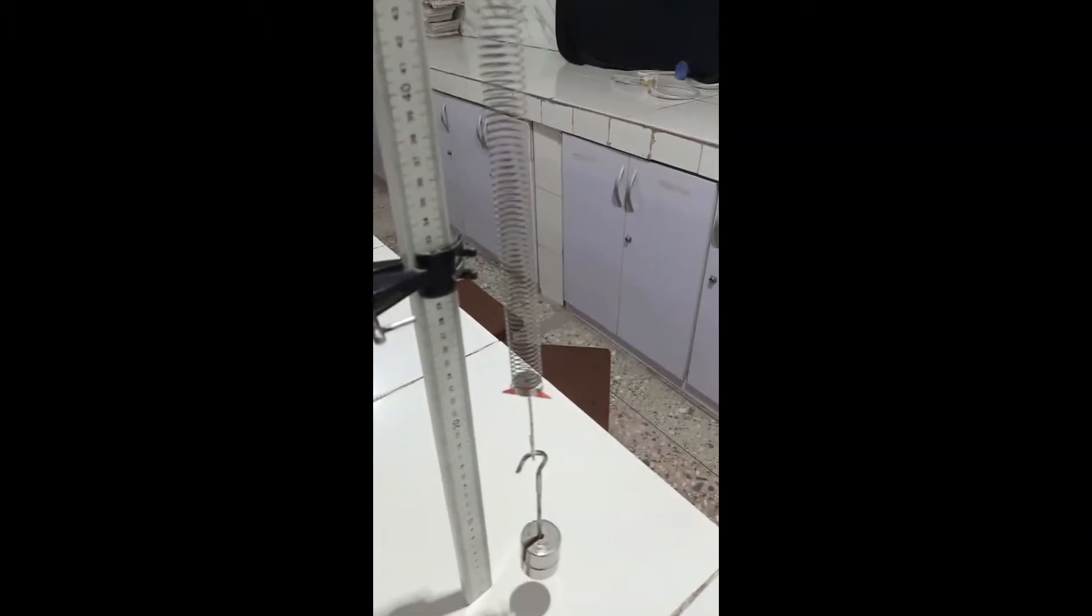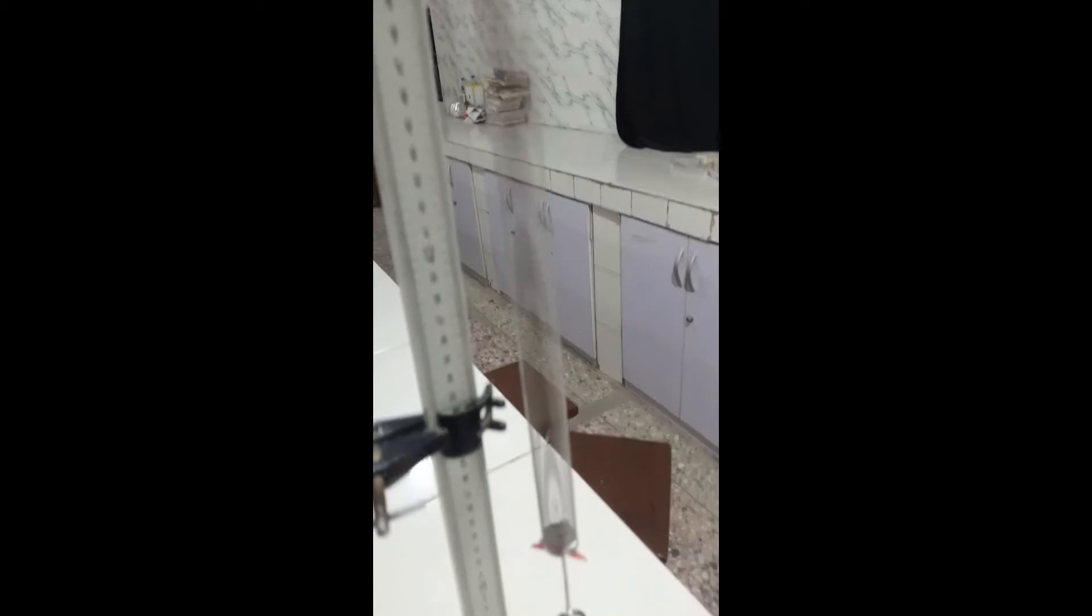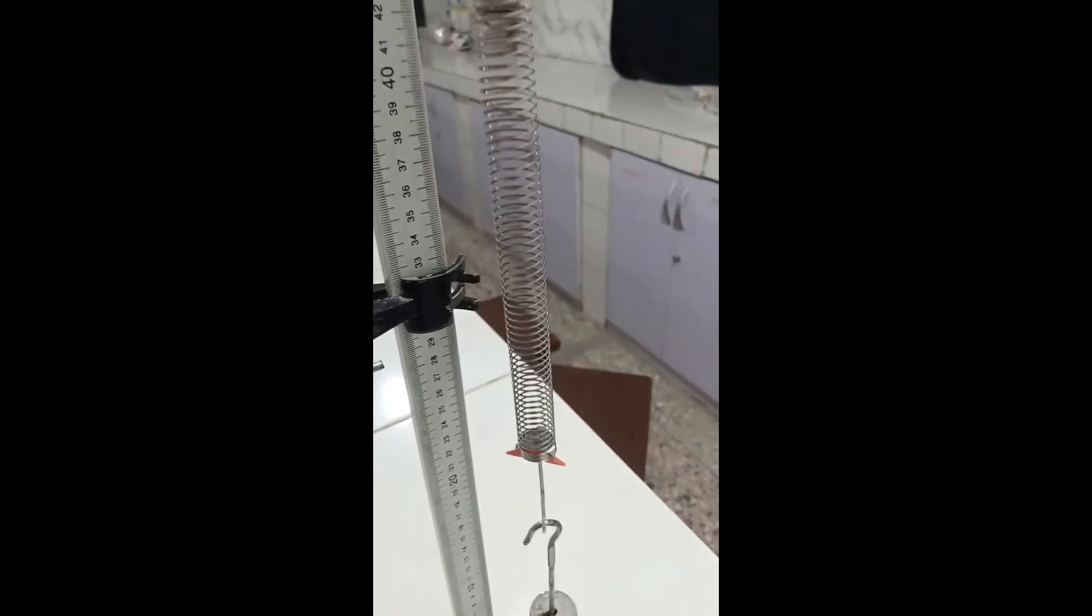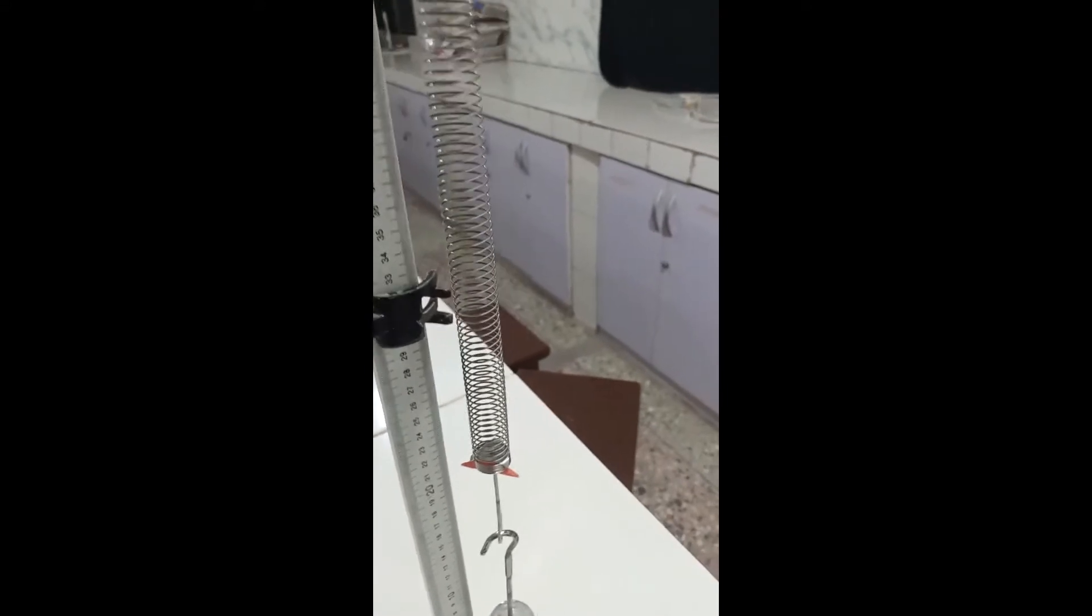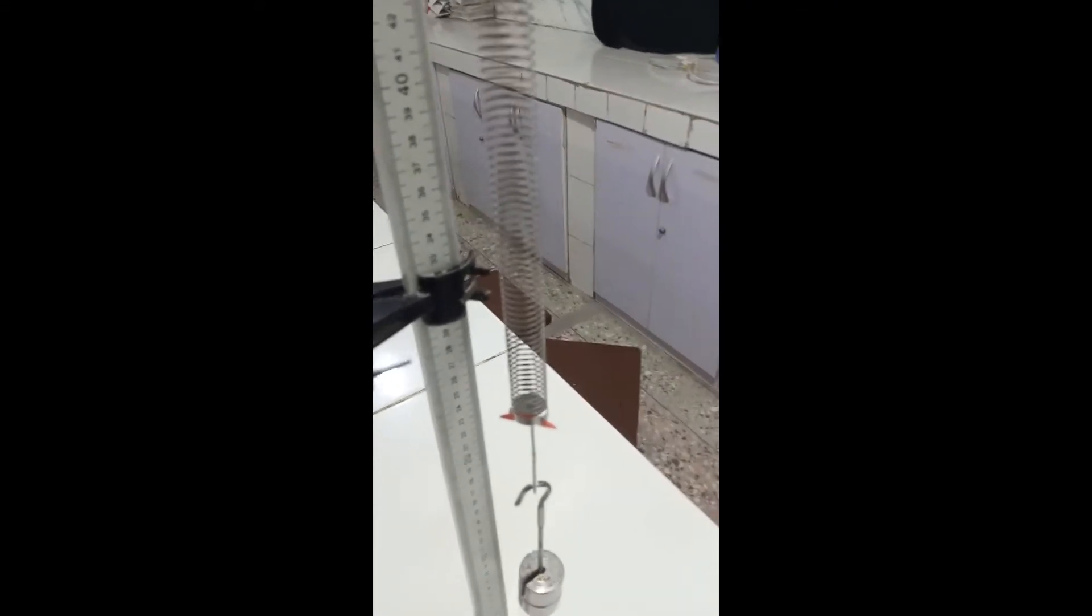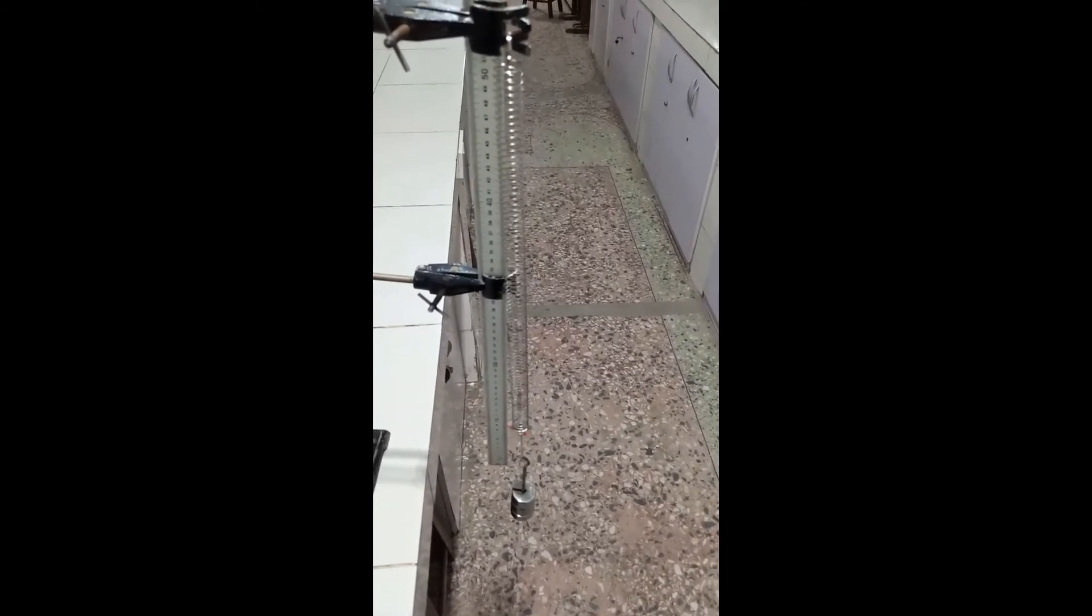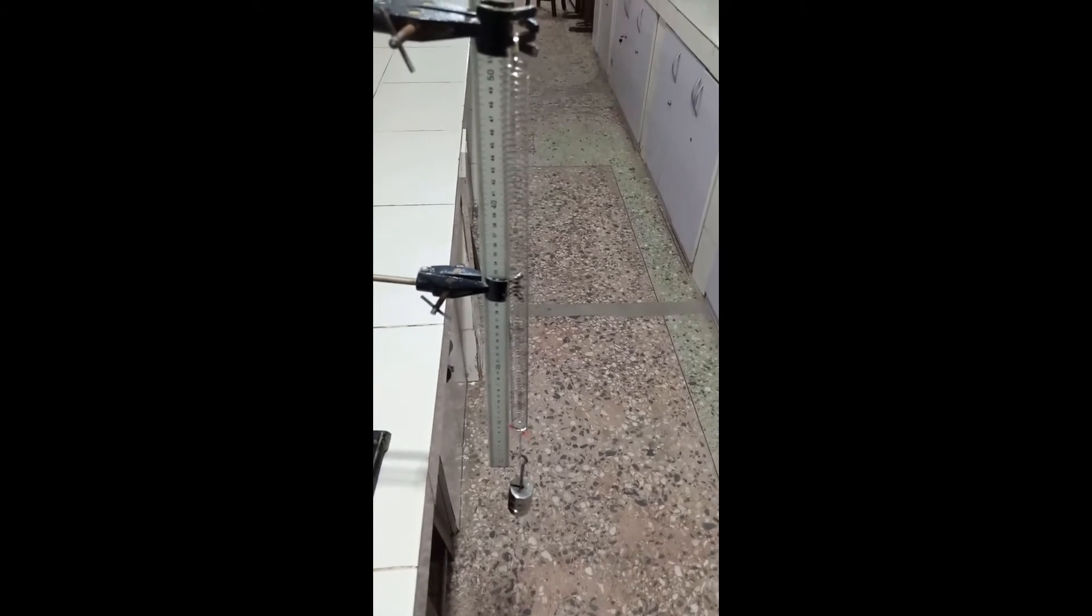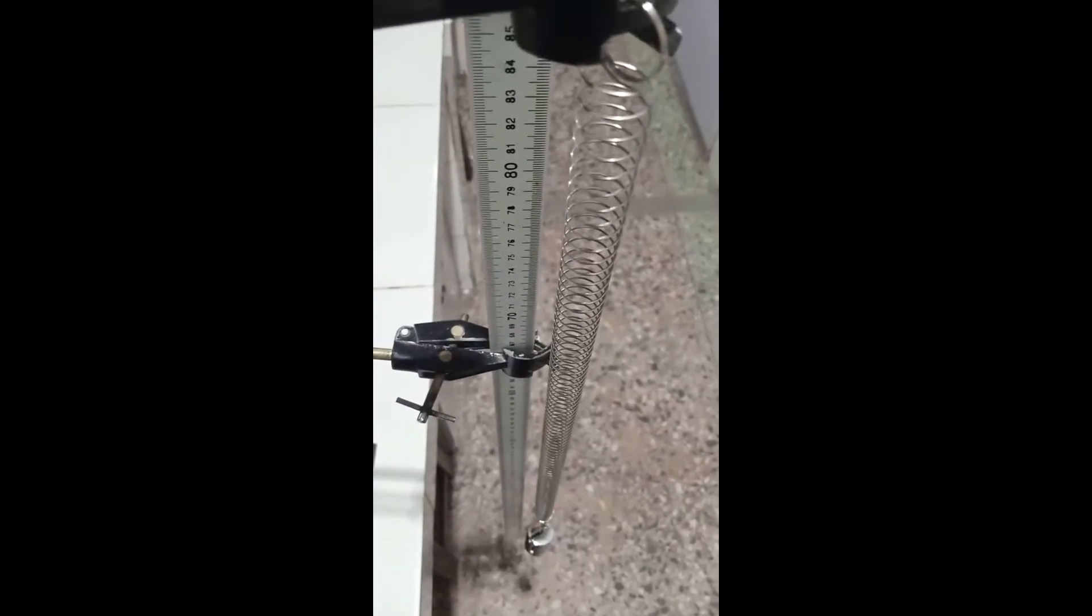So here is the second 100 gram mass hung on the spiral spring. I'm going to measure out and find the extension produced and then I'll subtract it from the original pointer reading and then find the extension for this particular mass. So here is the 0.3 kg mass, I'll do the same and then also record.